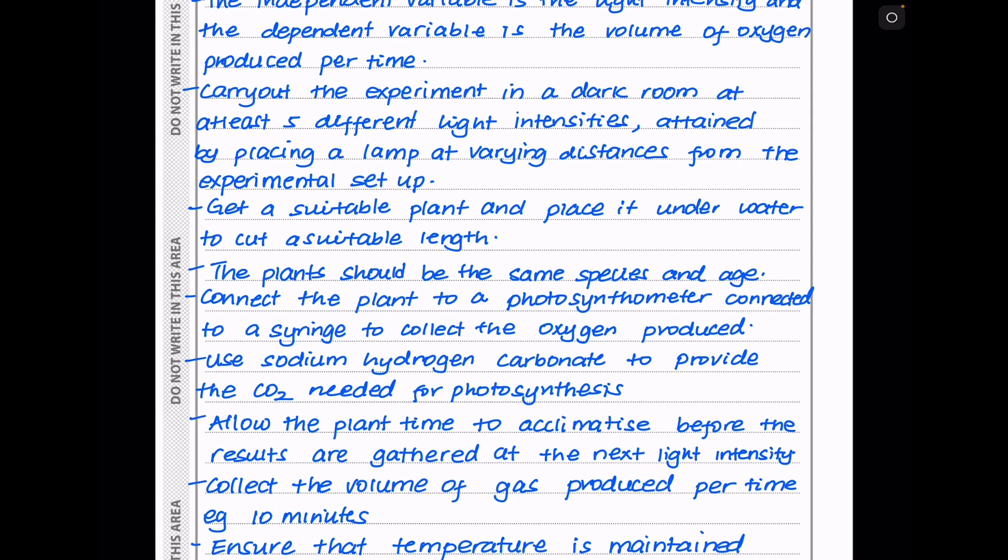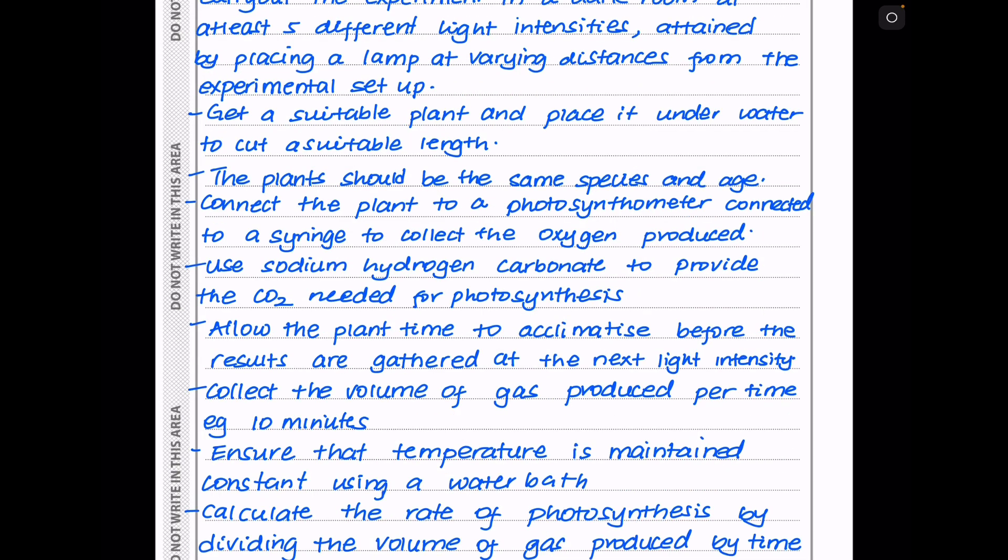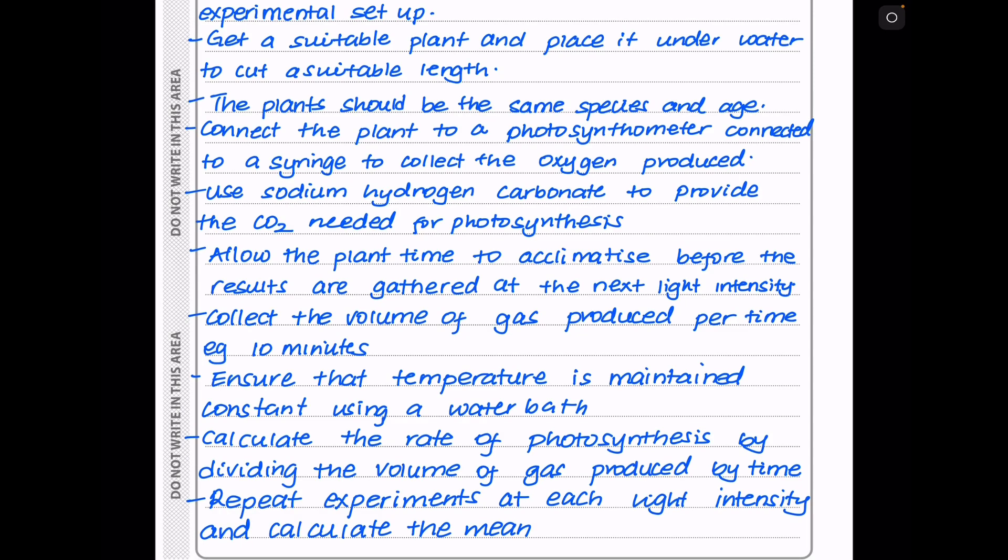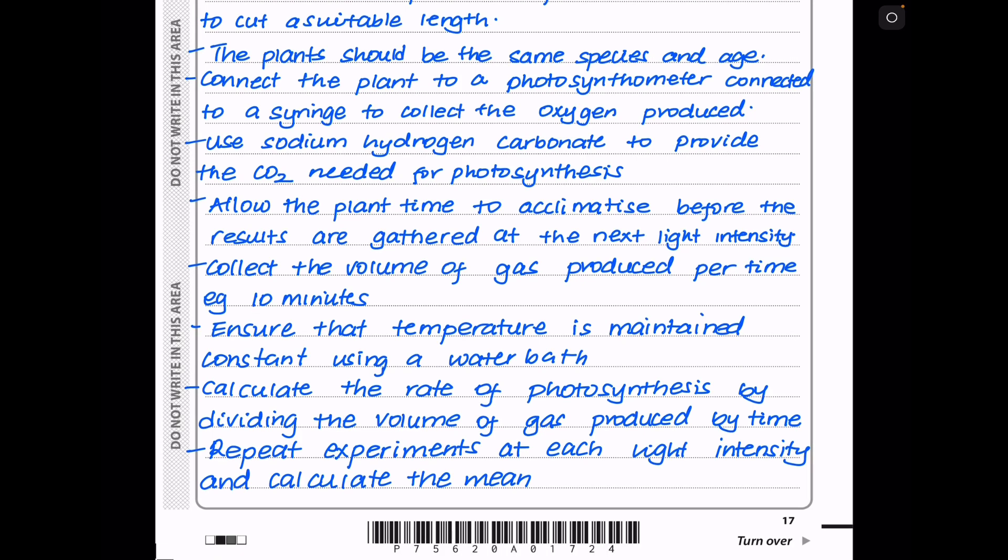Then connect the plant to a photosynthometer connected to a syringe to collect the oxygen produced. You have to use sodium hydrogen carbonate to provide the carbon dioxide needed for photosynthesis. This is going to be dissolved in the water. Then allow the plant to acclimatize before the results are gathered at the next light intensity. Collect the volume of gas produced per time. For example, this could be every 10 minutes. And ensure that the temperature is maintained using a water bath. Then calculate the rate of photosynthesis by dividing the volume of gas produced by the time. And repeat the experiments at each light intensity and calculate the mean.